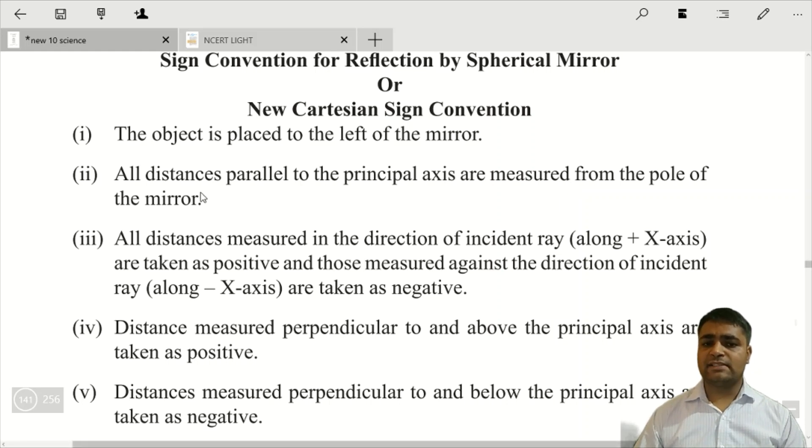Second point, all distances parallel to the principal axis are measured from the pole of the mirror. Jitne bhi distances measure karenge principal axis par, wo humesha pole se measure karenge. Clear?